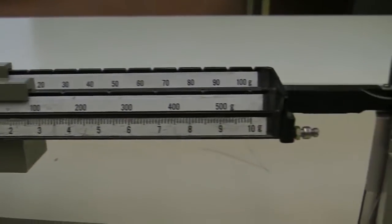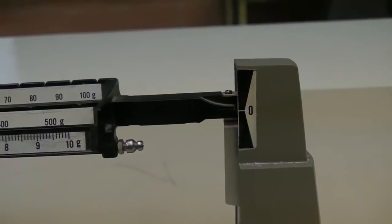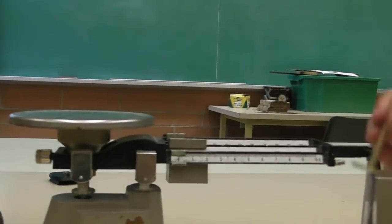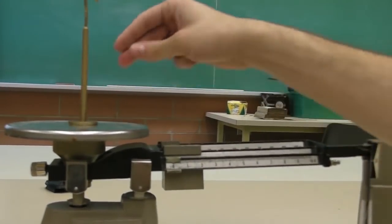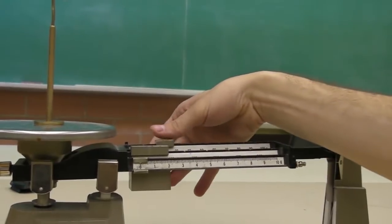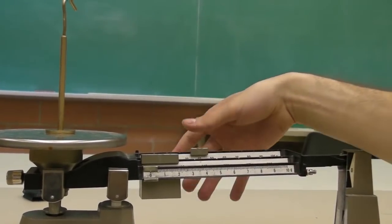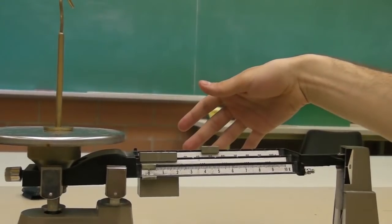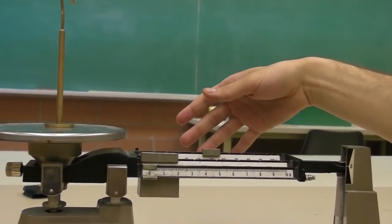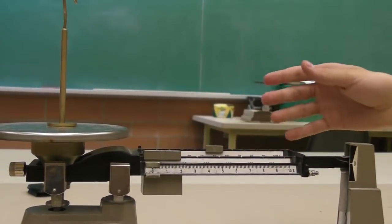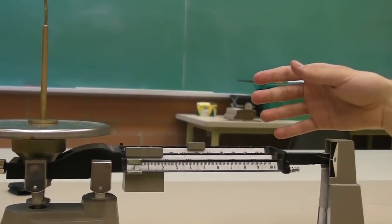First, ensure the scale is calibrated and that it points to zero when nothing is on it. To determine the mass of the mass holder, place it on the triple beam balance pan. We know the mass holder weighs approximately 50 grams, so we only have to play with the last slider. Once you have it around 50 grams, you might have to adjust the finer slider to get it right on.